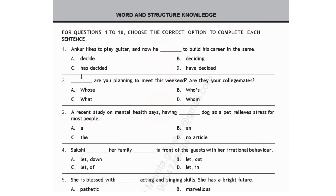This is your first section of this paper: Word and Structured Knowledge. For questions 1 to 10, choose the correct option to complete each sentence. The first question is: Ankur likes to play guitar and now he dashed to build his career in the same. This sentence requires a verb in present perfect tense, as the action is in the past with influence in the present. Since Ankur is singular third person, you need 'has' as your auxiliary. The correct answer is: Ankur likes to play guitar and now he has decided to build his career in the same. Option C is your correct answer.